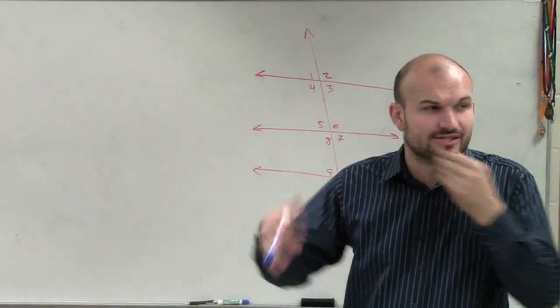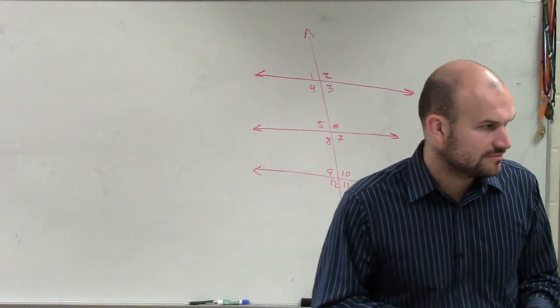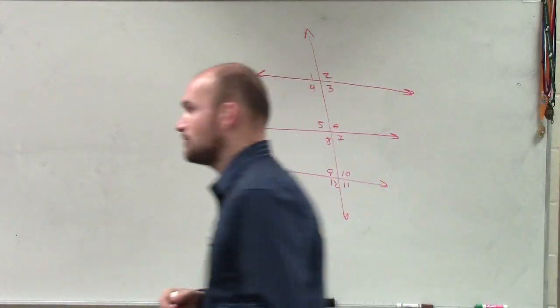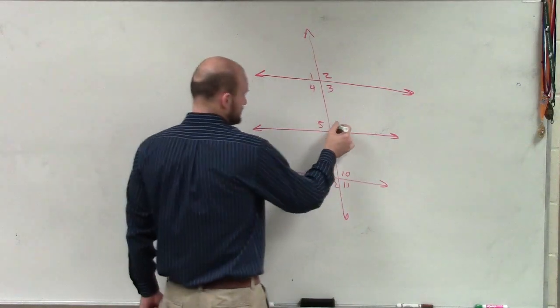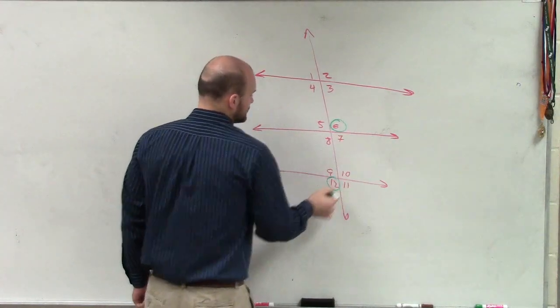6 and 12. They're asking us, what is the relationship of 6 and 12, of angle 6 and angle 12? So what I'm going to do is I'm going to circle them. So we have angle 6 and we have angle 12.